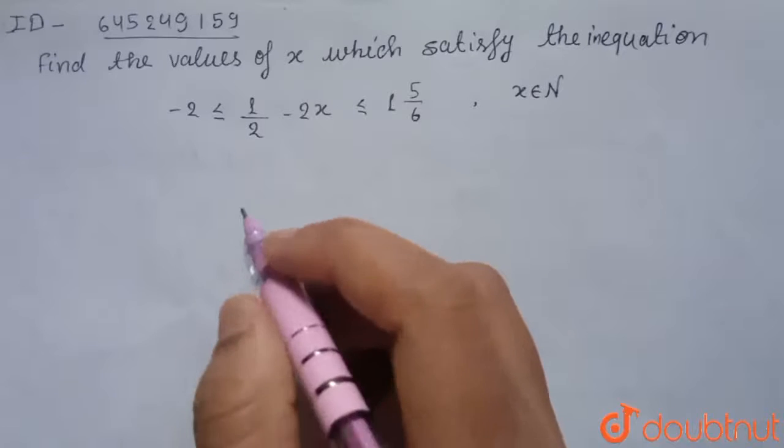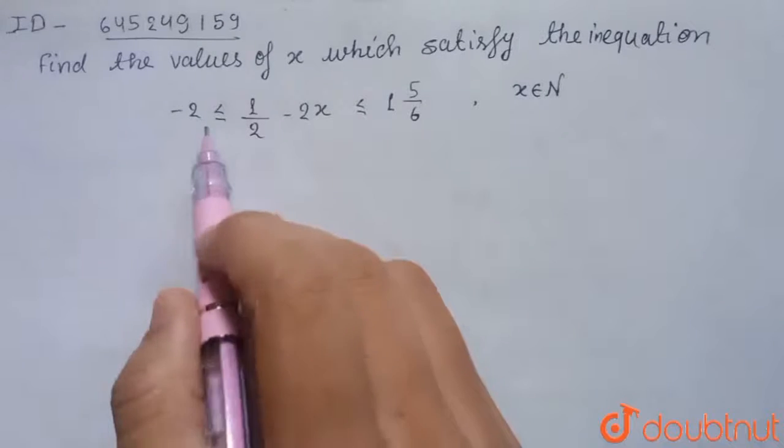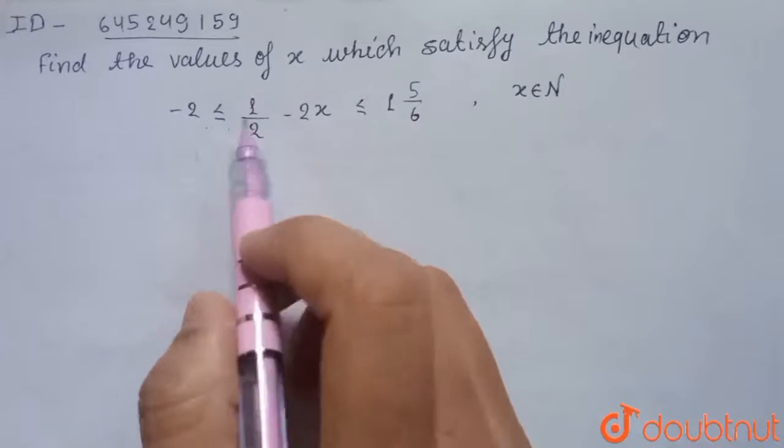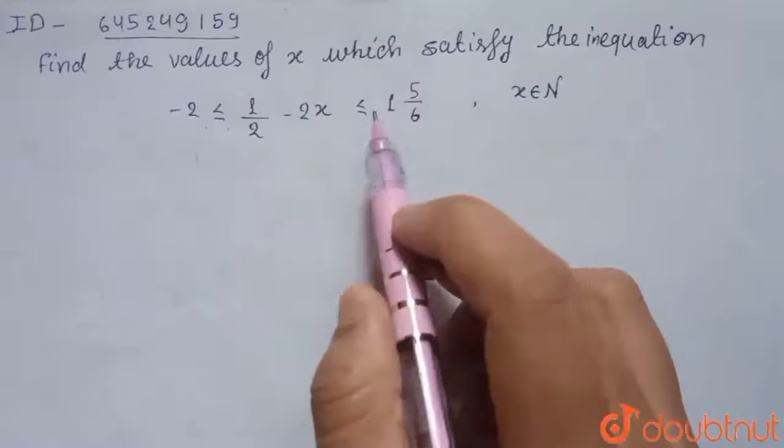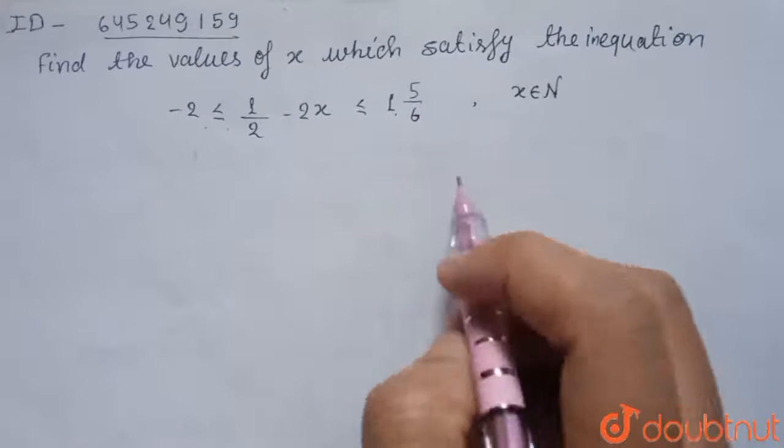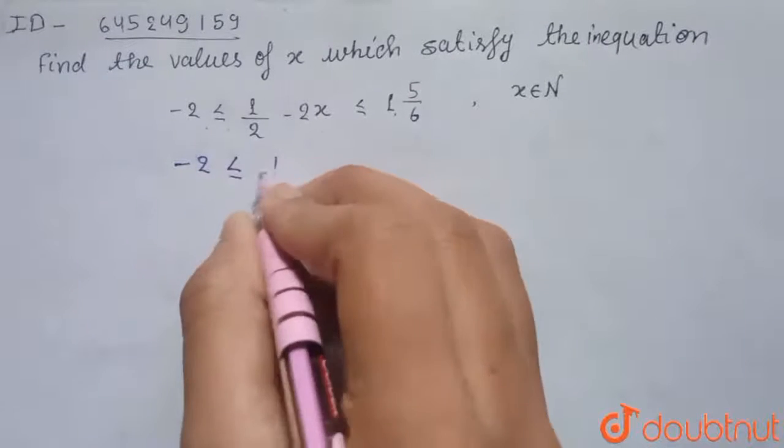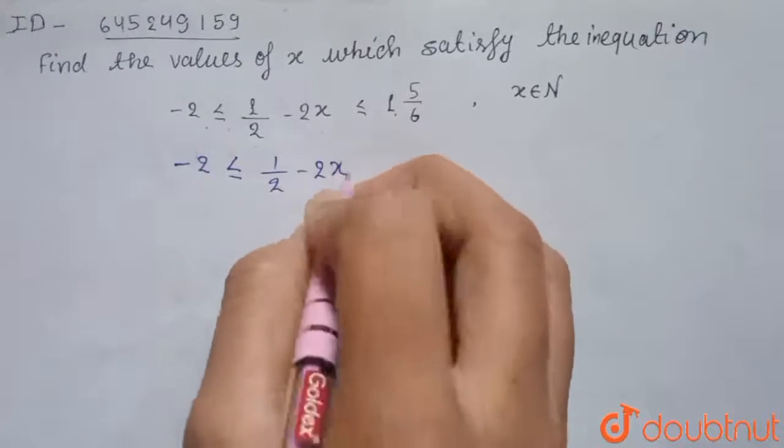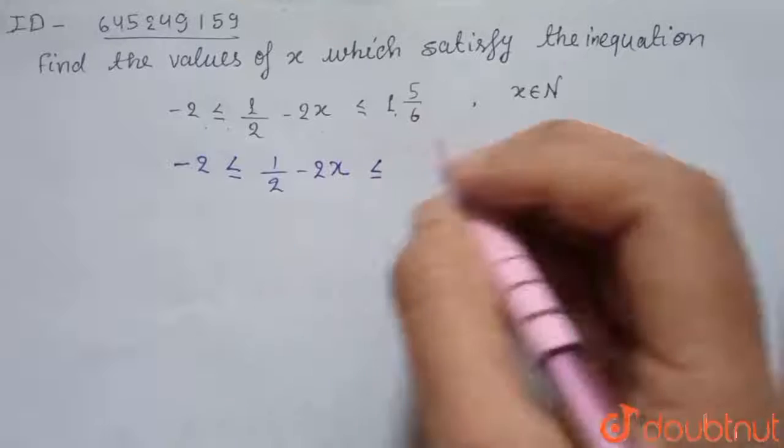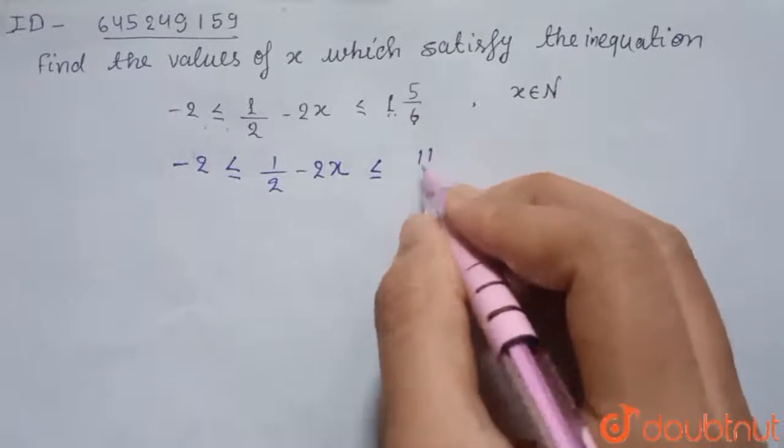Question is find the values of x which satisfy the inequality -2 ≤ 1/2 - 2x ≤ 1 5/6. So here we can write this as -2 ≤ 1/2 - 2x. This can be written as 1 + 5/6 that is 11/6.